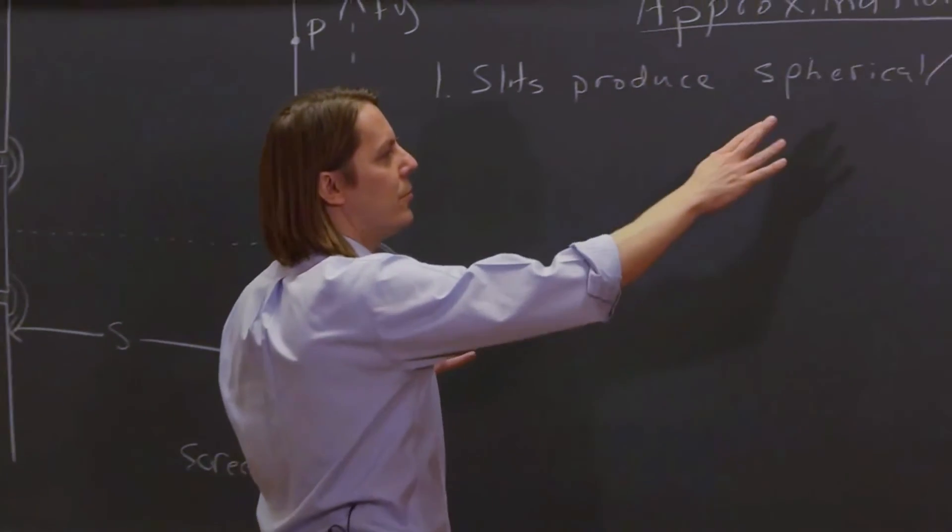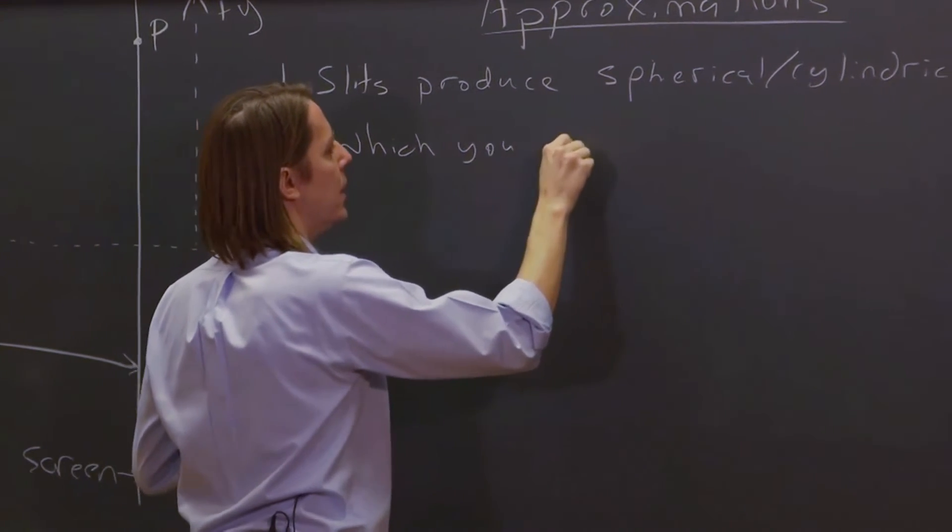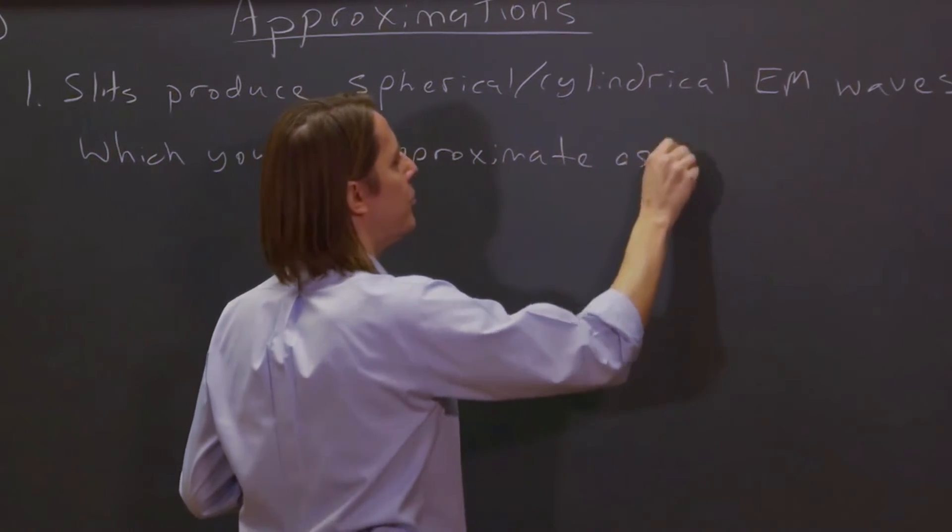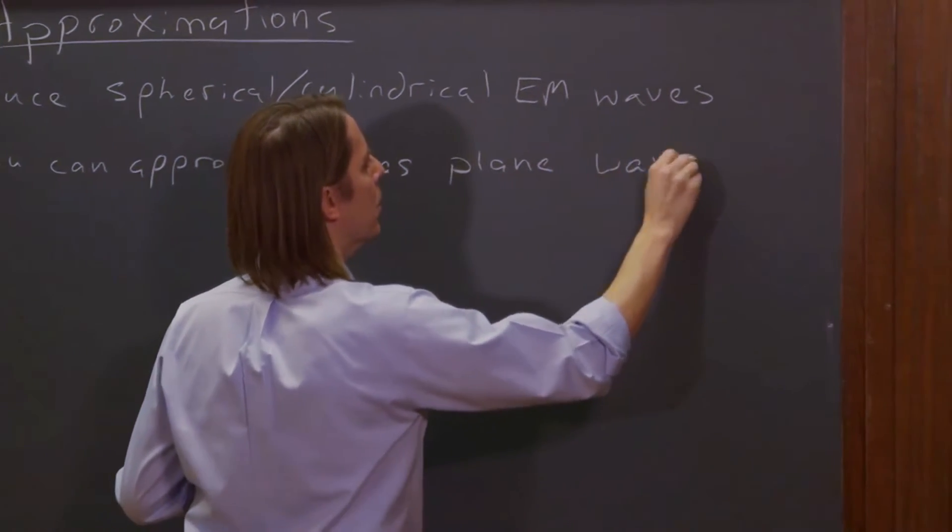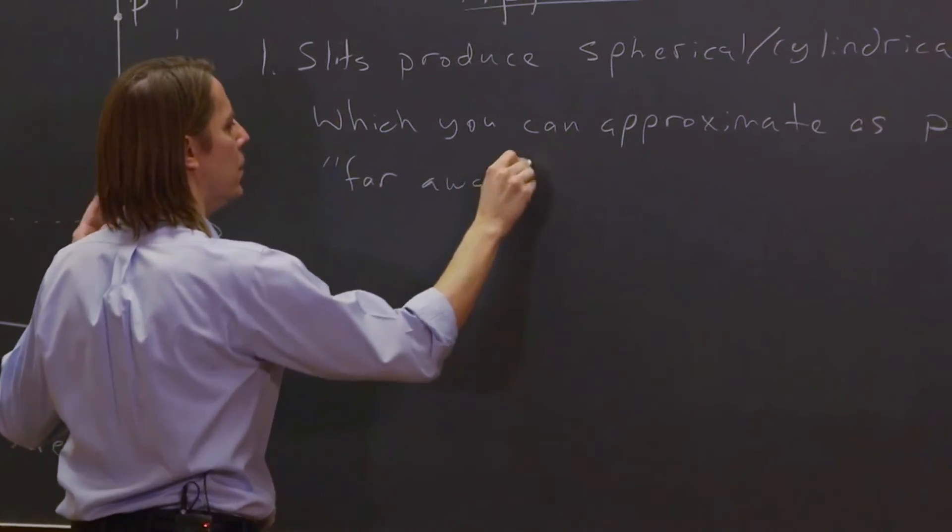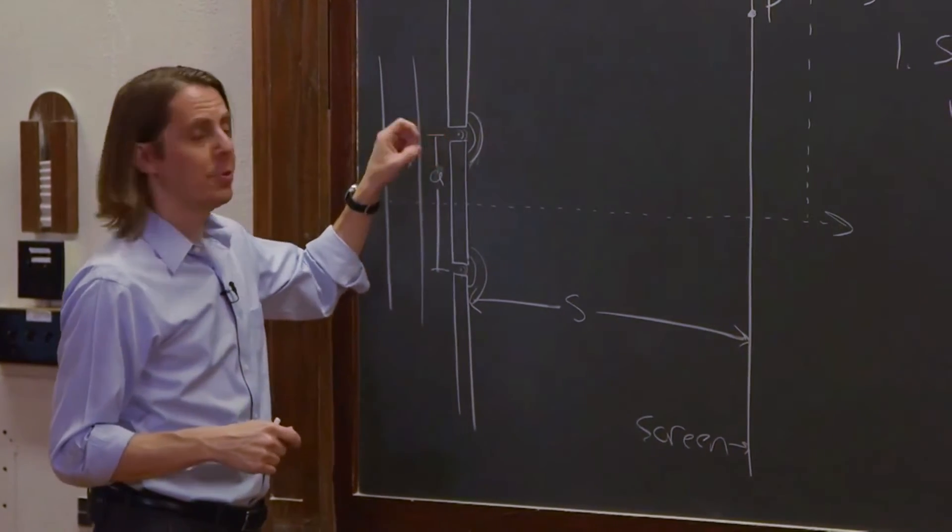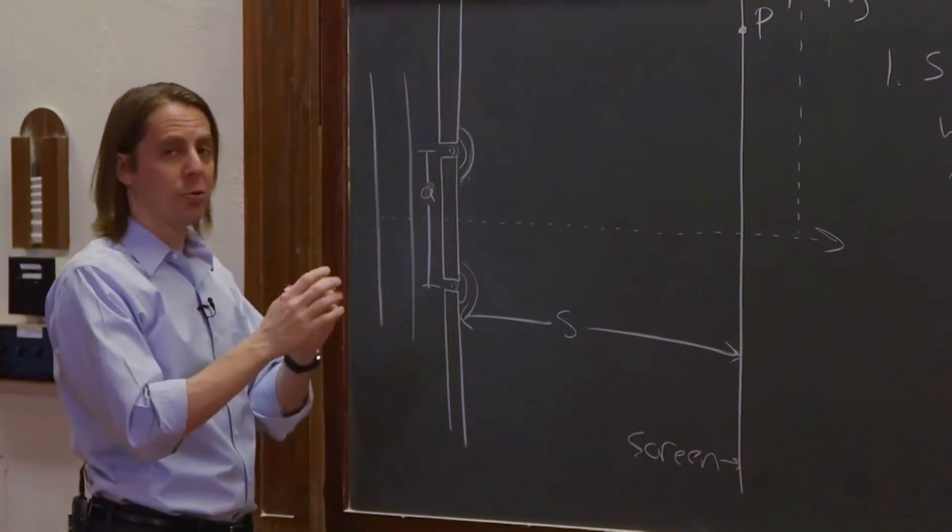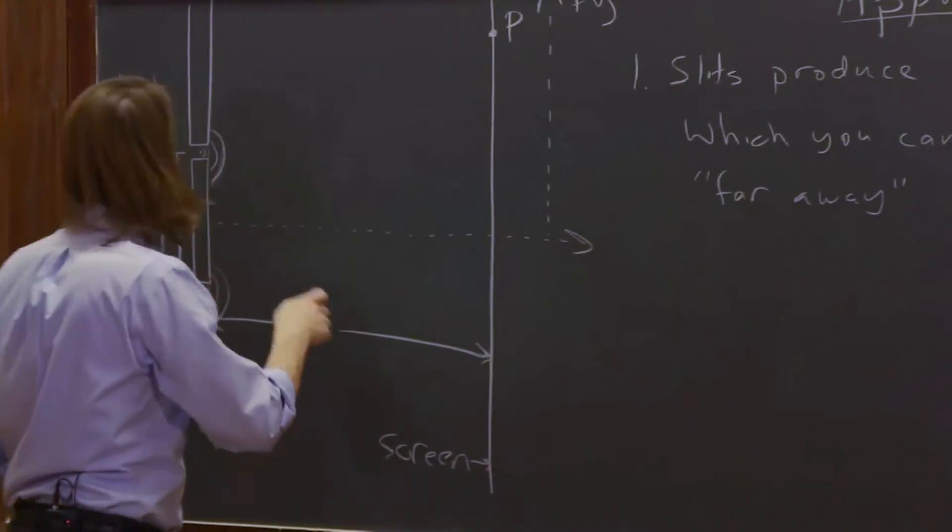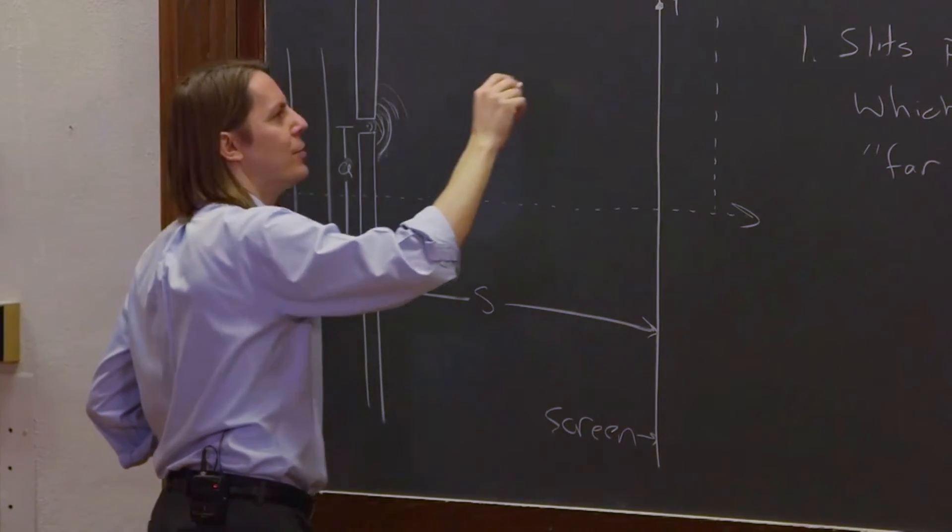It produces these cylindrical, spherical EM waves, which you can approximate as plane waves far away. So in addition to the plane wave solution to Maxwell's equations, there is a spherical wave solution of light just going out as a sphere, and there's a cylindrical wave solution, light going out as a cylinder. But if you get really far, then what you can say is, well, the curvature is going down.